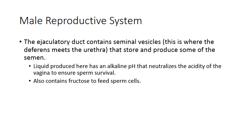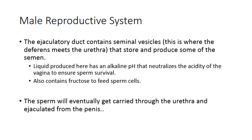The ejaculatory duct contains the seminal vesicles — this is where the vas deferens meets the urethra. These vesicles store and produce the liquid portion of the ejaculate. The fluid produced has an alkaline pH, neutralizing the acidity of the vagina so sperm can survive, and it also contains fructose to feed the sperm cells. Another accessory reproductive gland to know is the bulbourethral gland, which also neutralizes the acidity of the vagina.